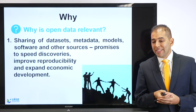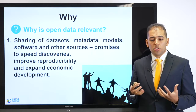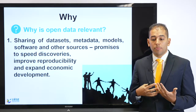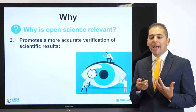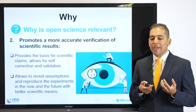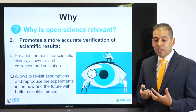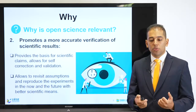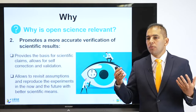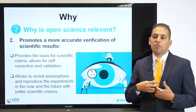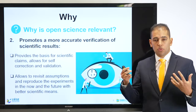Why is open data important and relevant? Because sharing of datasets and metadata models, software and other resources promises to speed discoveries, improve reproducibility, and expand economic development. It also promotes a more accurate verification of scientific results, provides the basis for scientific claims, allowing for self-correction and validation, and allows us to revisit assumptions and reproduce the experiment now and in the future with better scientific means, allowing for meta-analysis for randomized trials or case studies.